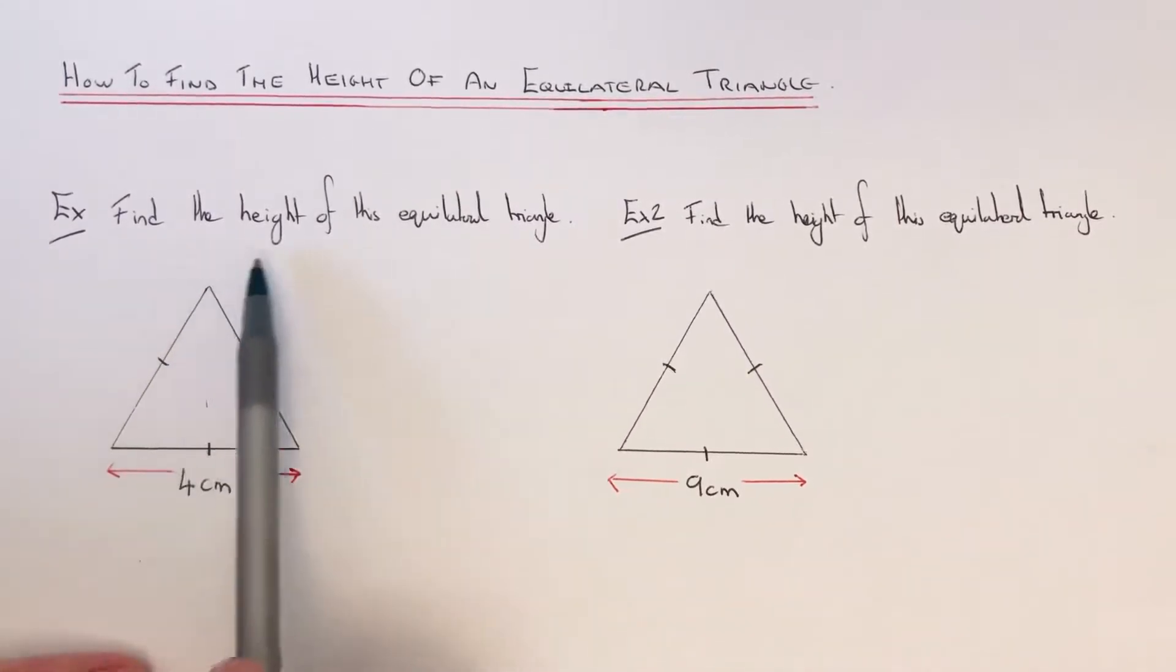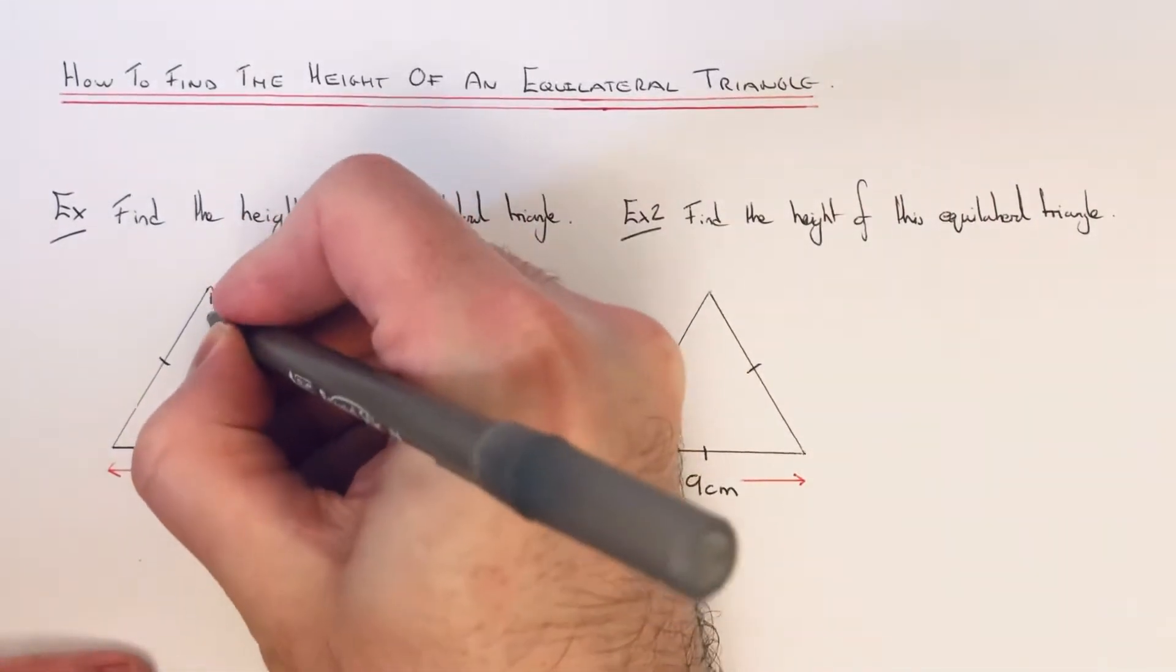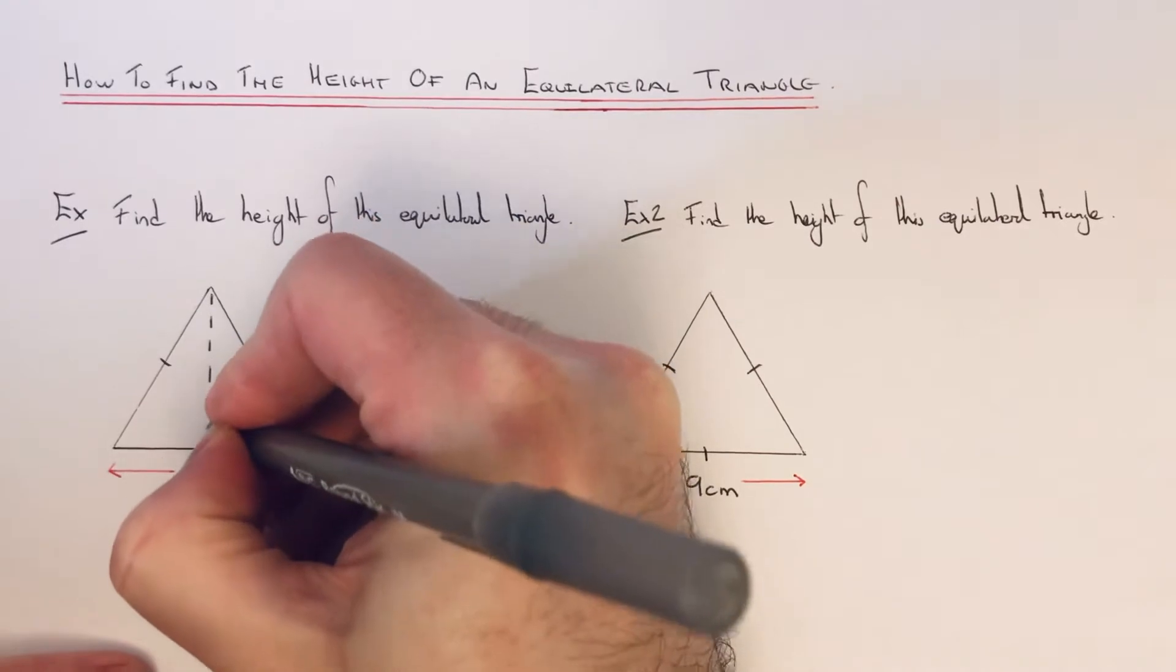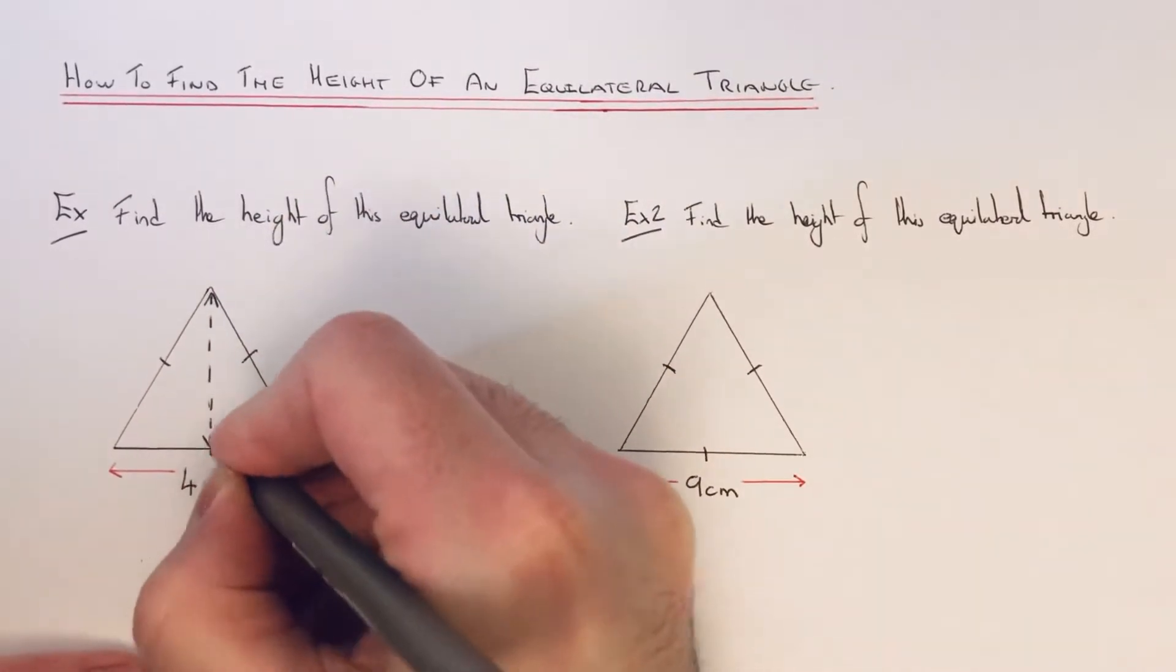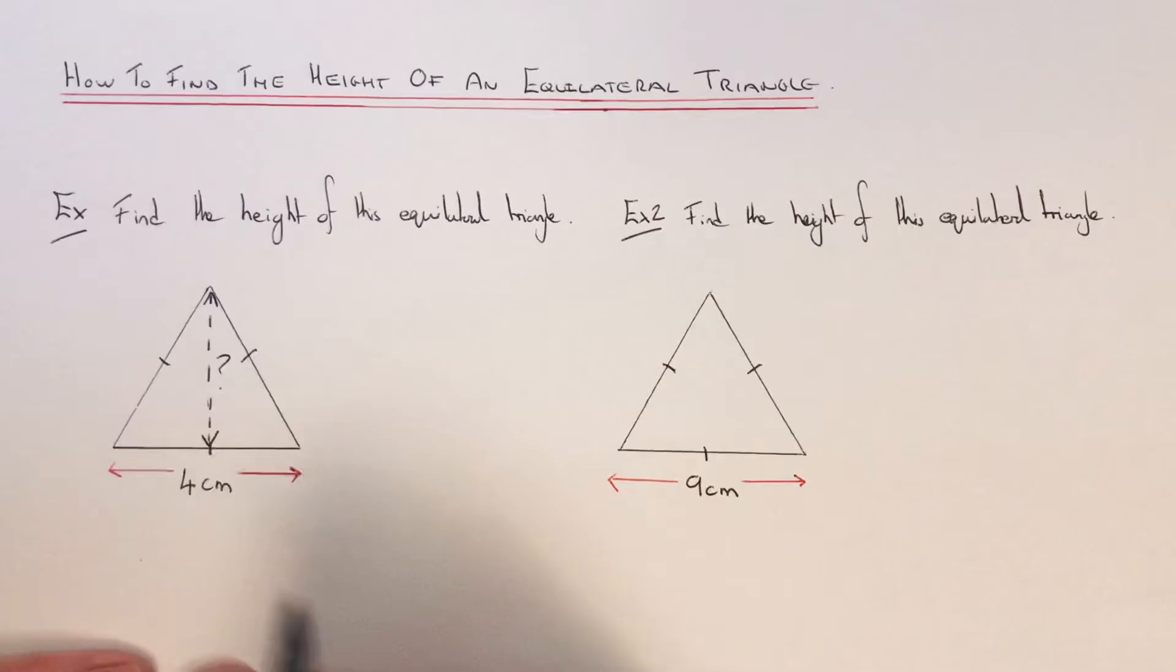So we're going to find the height of this equilateral triangle. We're trying to work out the vertical height or the perpendicular height, this length here.